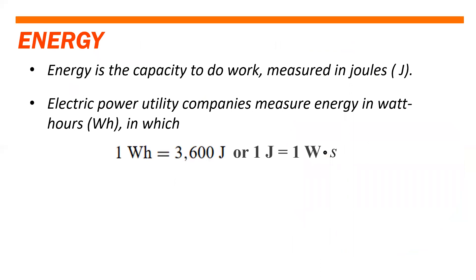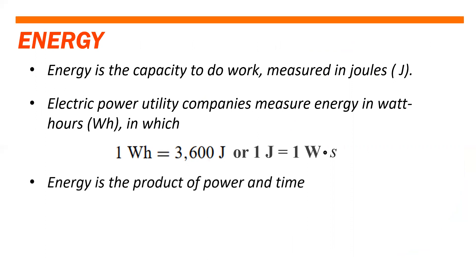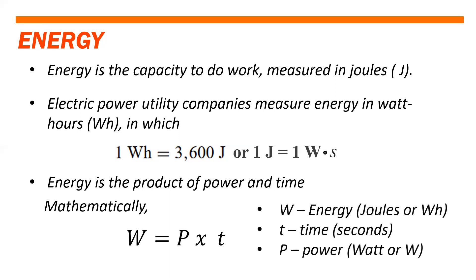Now let's go to energy. Energy is the capacity to do work, measured in joules. Electric power utility companies measure in watt hours, where one watt hour equals 3600 joules, or one joule equals one watt second. Energy is the product of power and time. Mathematically, W equals P multiplied by T, where W is energy in joules or watt hours, T is time in seconds, and P is power in watts.